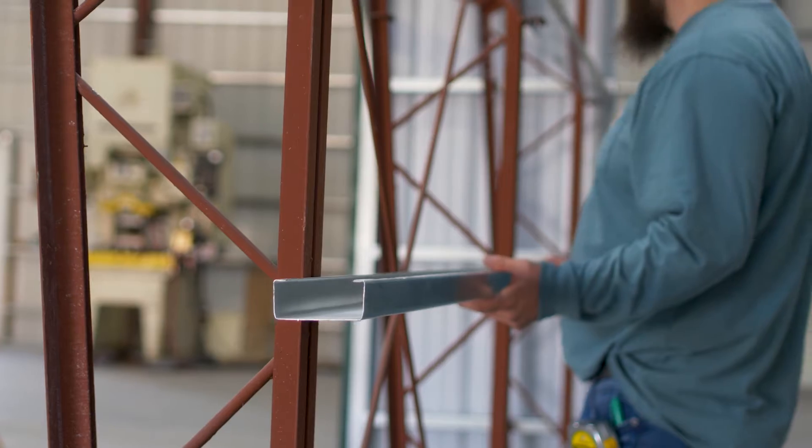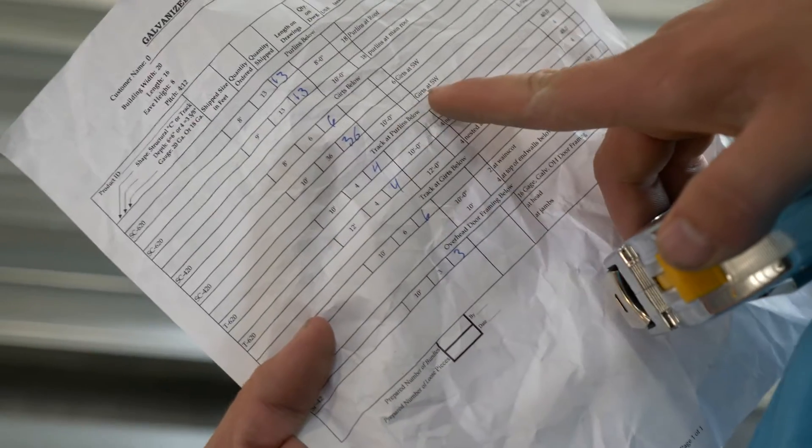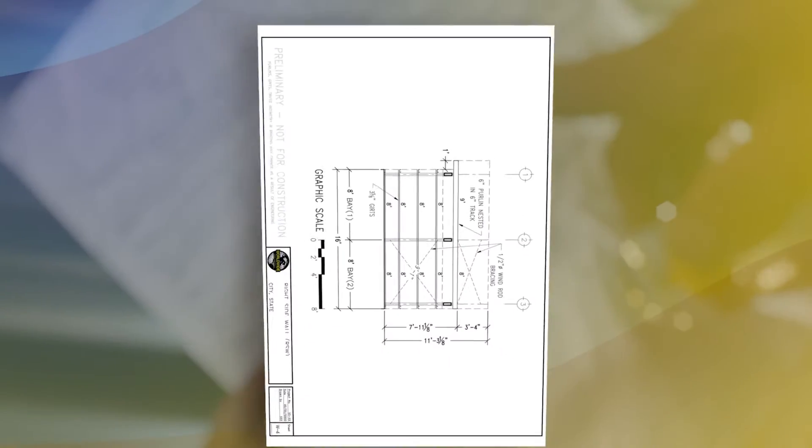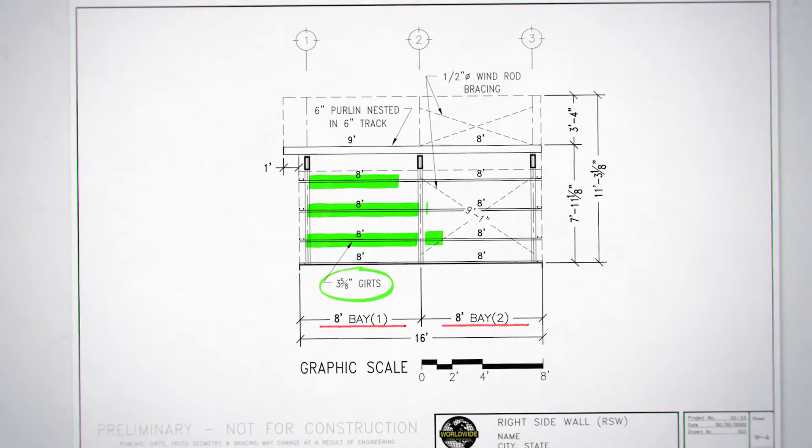When installing girts along the sidewall of your building, make sure that you have the correct girt for each location. Your W drawings and ship list will show you which girts should be used and where they should be placed in your building.